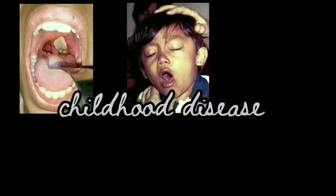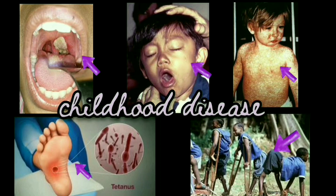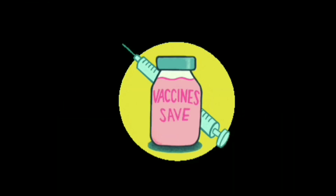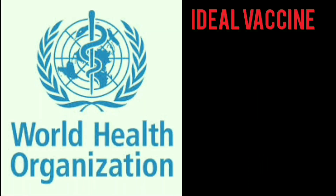Many previously common childhood diseases like diphtheria, measles, mumps, whooping cough, poliomyelitis, and tetanus are seldom seen, and this is a testament to the effectiveness of vaccination. Vaccine is a popular term nowadays, and it is clear that vaccines are a cost-effective weapon for disease prevention. The World Health Organization has stated that the ideal vaccine would have the following properties.